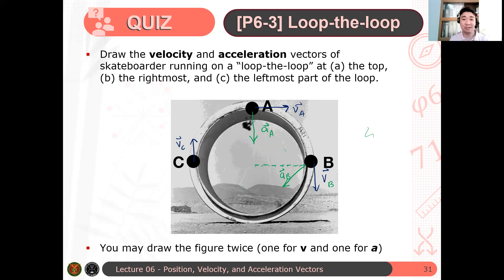Diagonal upward or diagonal downward? Downward. Downward pa rin. Kasi in that case, the velocity now and the parallel component of acceleration, they are not opposite each other. So therefore, if you do that, dapat downward pa rin iyan.